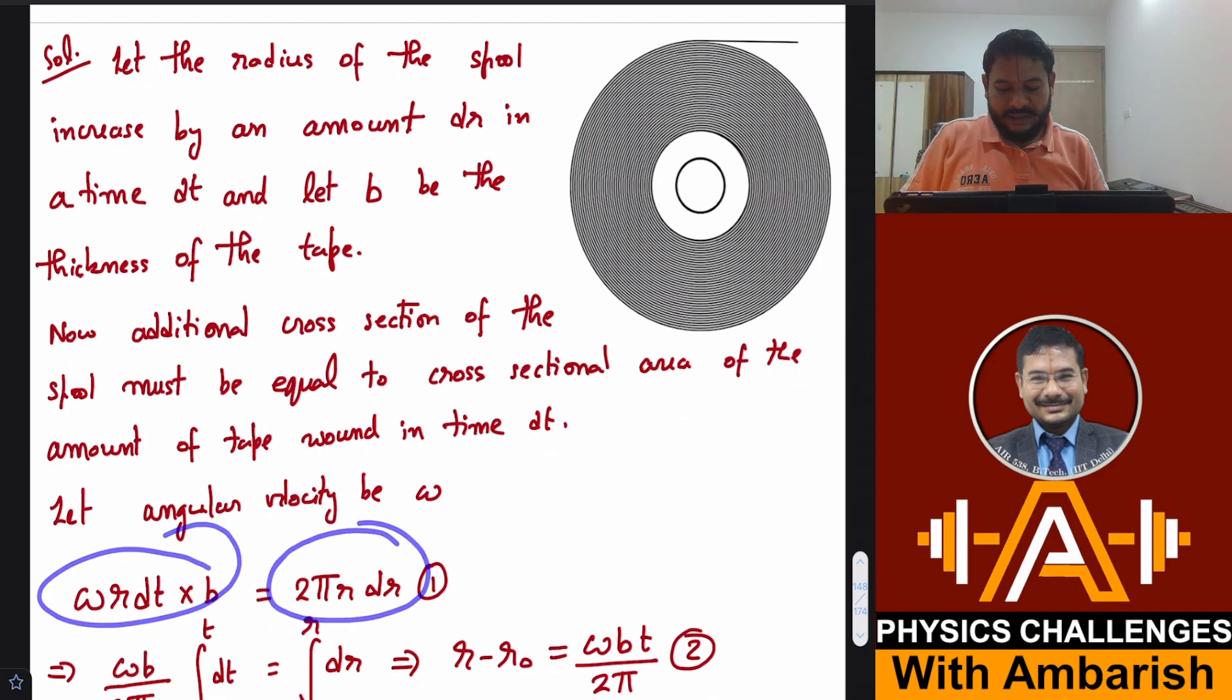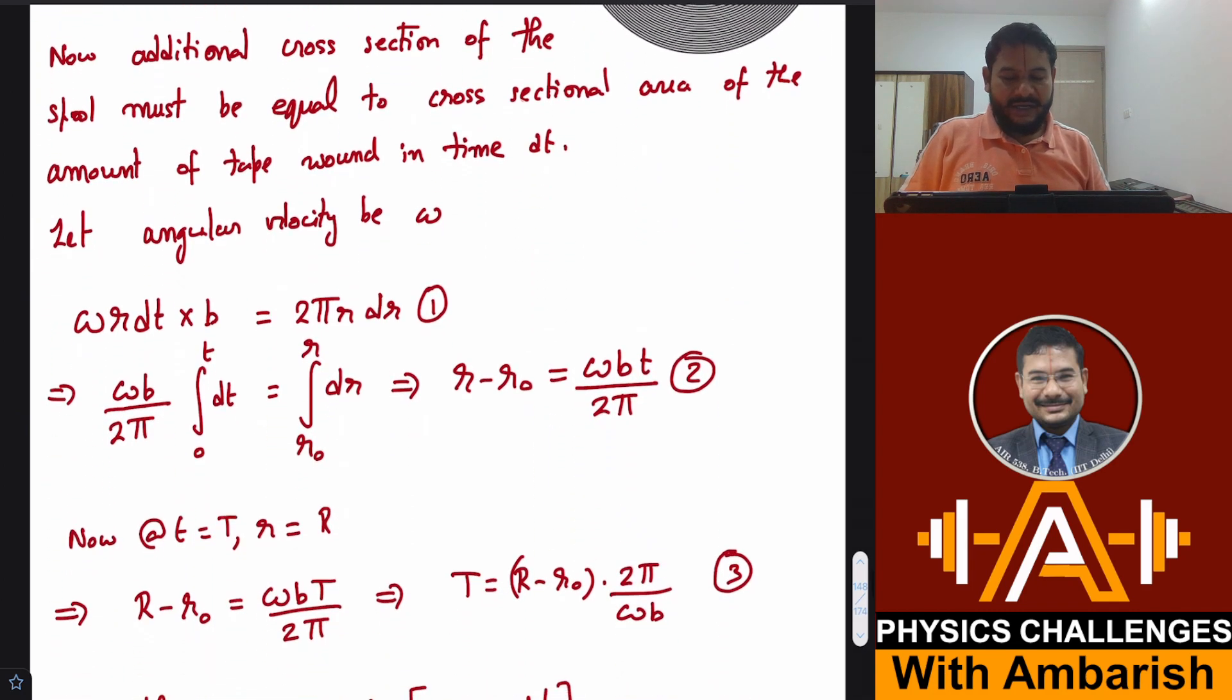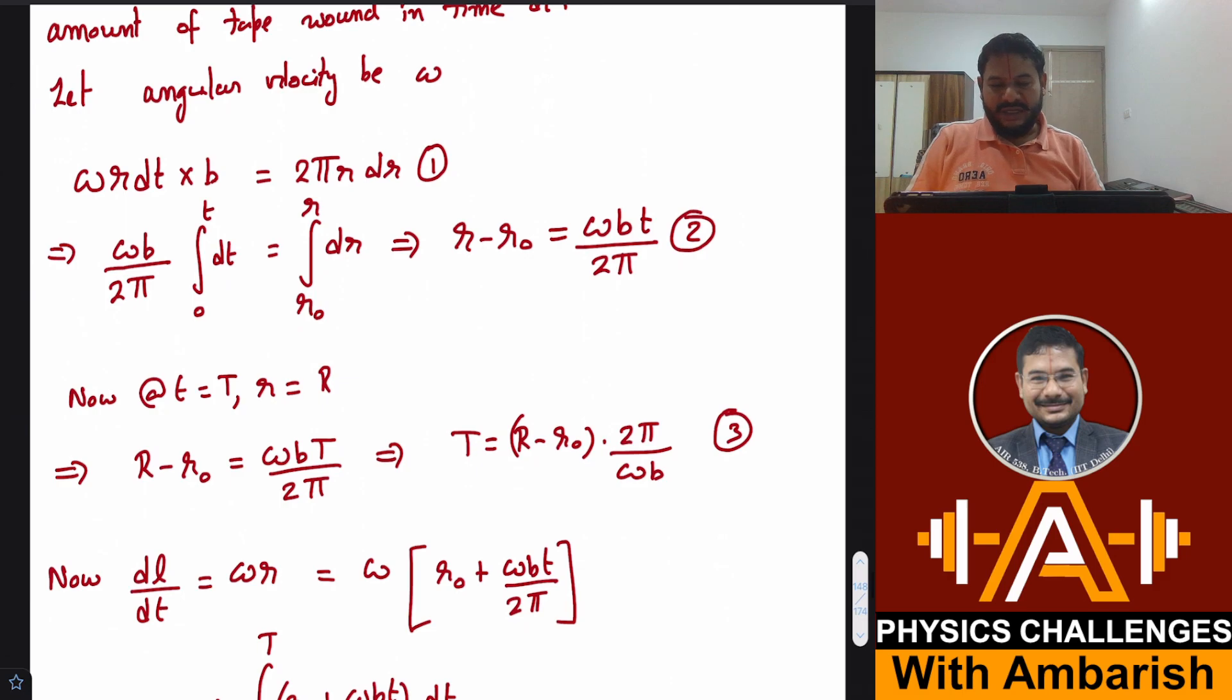So this gives me a differential equation in time and the radius of the spool. I can now just integrate it, separate the variables. Omega b upon 2π integral dt equals r dr. If you take a definite integral up to general time t, you get r minus r0 equals omega bt upon 2π. So this is one equation I've got.